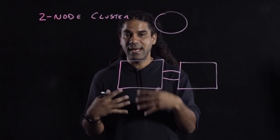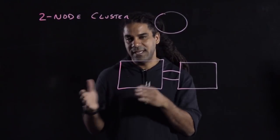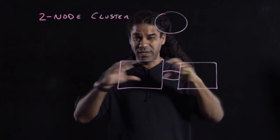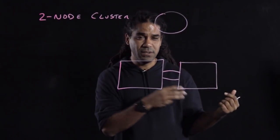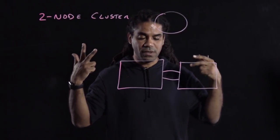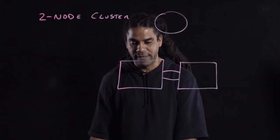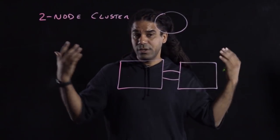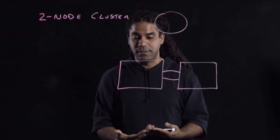But the challenge with that is that vSAN, to provide protection with an FTT of one, requires at least three nodes. So how do we go about it? Enter the two-node cluster.